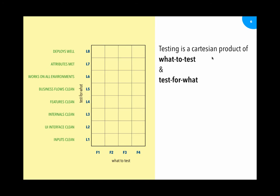Testing is really a Cartesian product of what you want to test, denoted on the x-axis, and 'test for what,' denoted as various criteria on the y-axis. The x-axis could represent the various elements under test — a feature, user story, requirement, and so on — whereas the y-axis represents criteria related to data and inputs, the interface, internal structure, and the behavior of individual features.